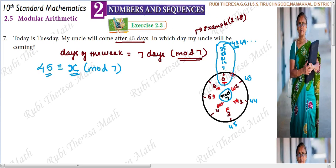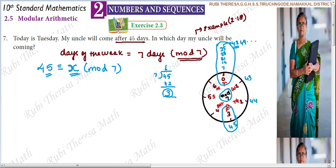After 45 days: the 42nd day is Tuesday. So counting from there: 43, 44, 45. The answer is Friday. 45 mod 7 gives remainder 3, and 3 corresponds to Friday on the clock.